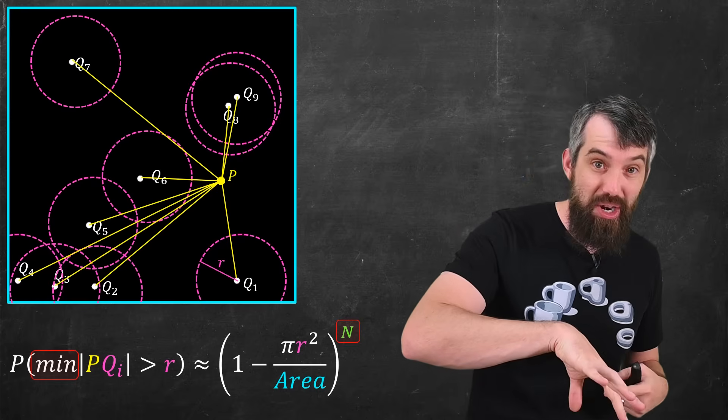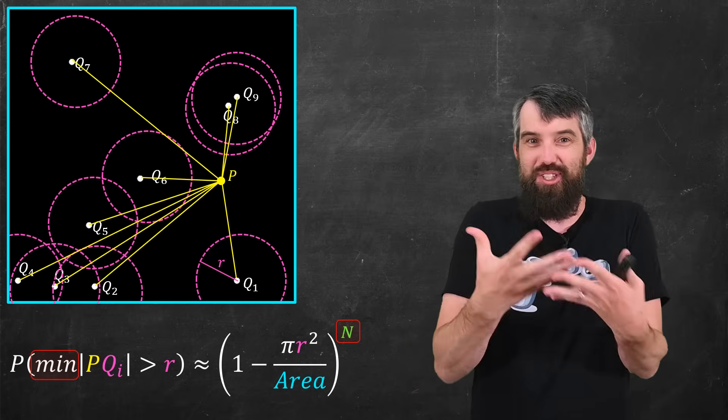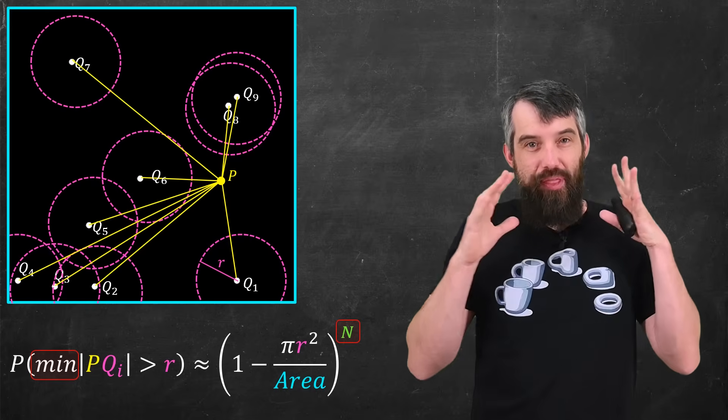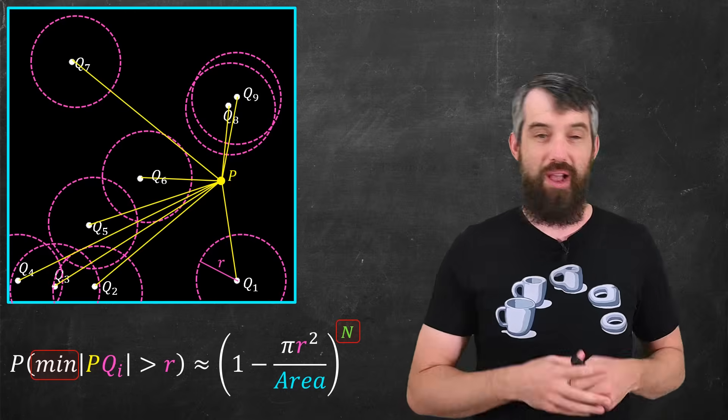And notice that if we were talking about less than R, if we hadn't done that 1 minus trick, then we'd really have to worry about the fact that circles were overlapping. But this way that I've done it, I don't have to worry about it. It's just a pure multiplication.